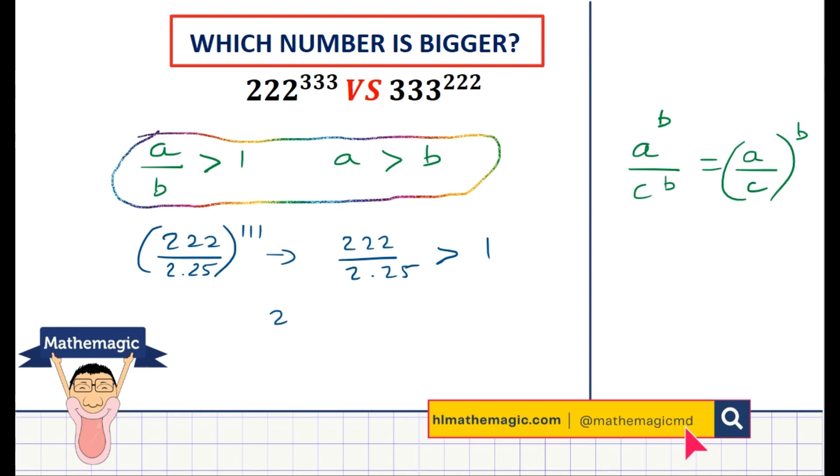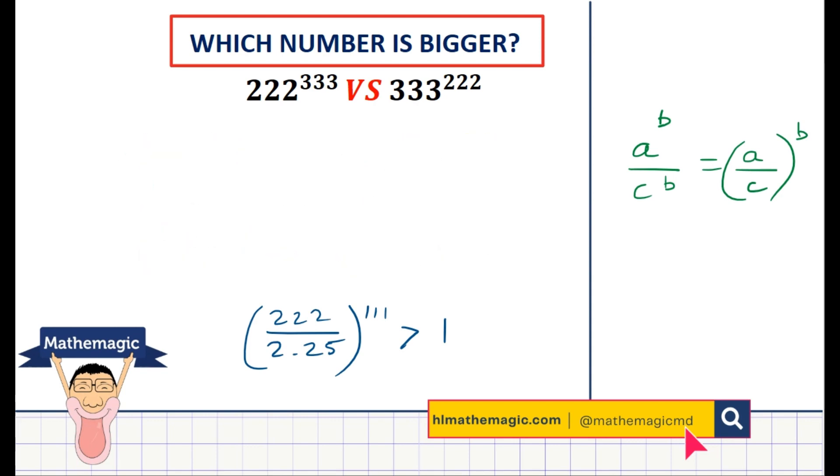So if you were to say 222 divided by 2.25, all of that to the power 111, well this result is definitely greater than 1. And so this proves the point, which is that 222 to the power 333, which was the top number, is definitely bigger than 333 to the power 222. And with this, we can be happy that we answered this question.